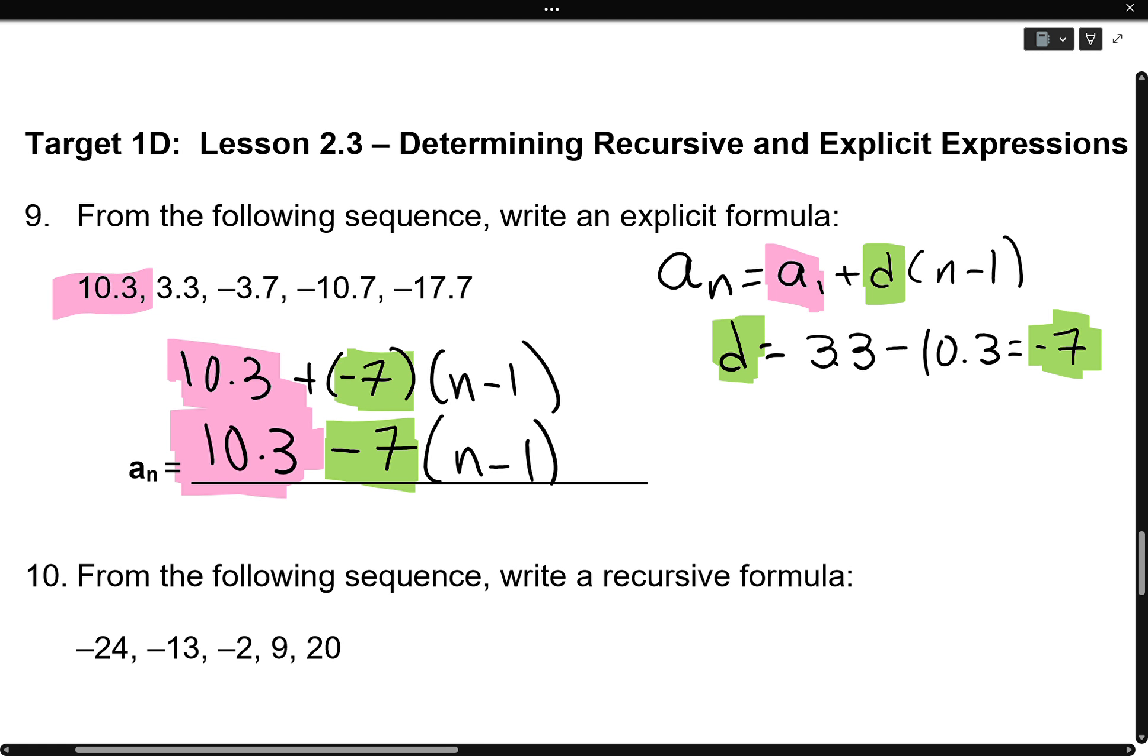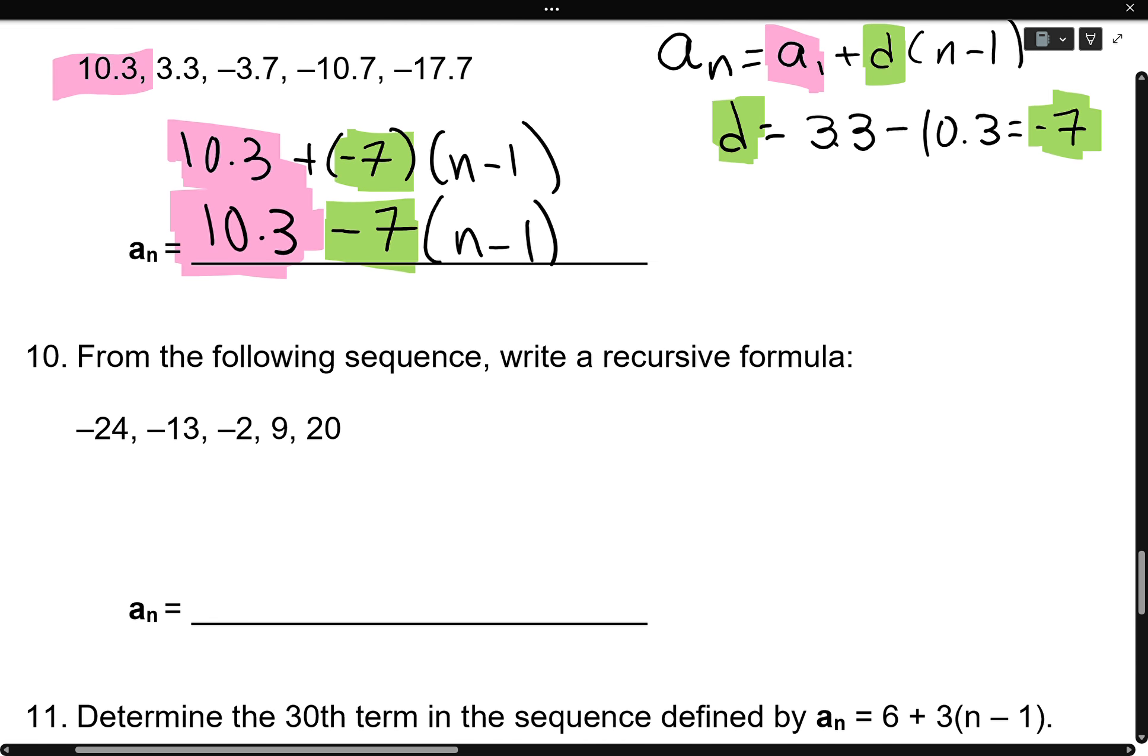Number ten. I'd like us to write a recursive formula. Now the recursive formula is as such. And the only thing we're looking for is the common difference. So I'm going to start off my equation like this. Because I already have that a_n minus one. Let's find the common difference by doing second term, negative thirteen minus first term, negative twenty-four. Which gives us positive eleven. So plus eleven.